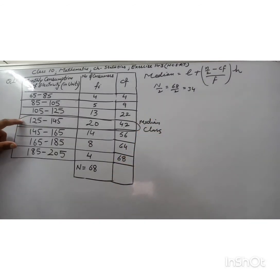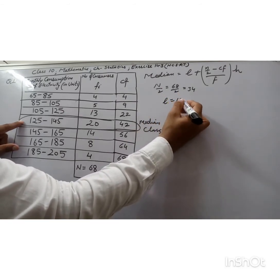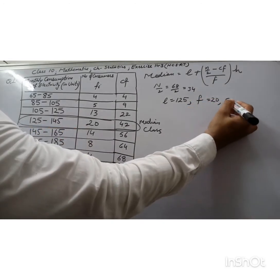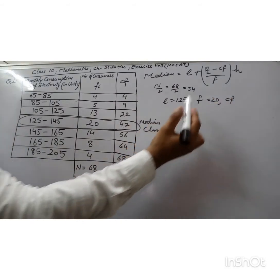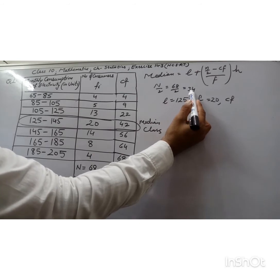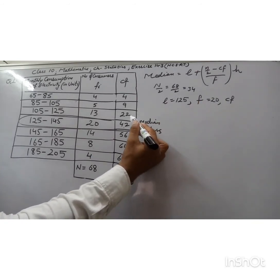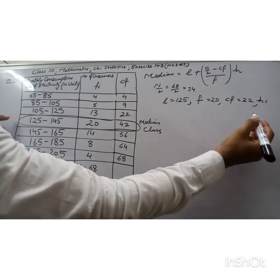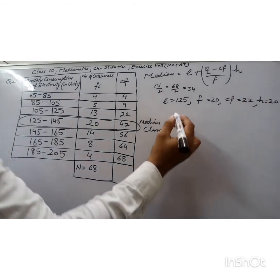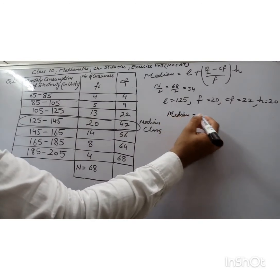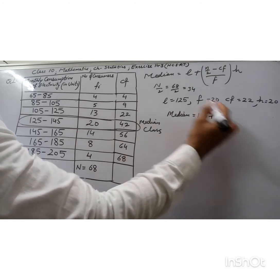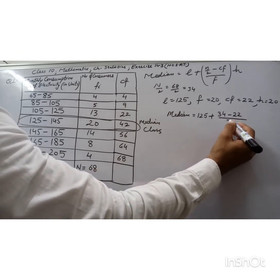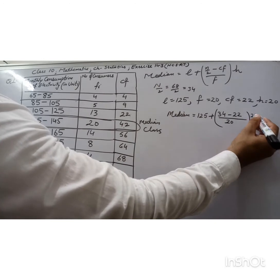The lower limit of the median class is l = 125, and the frequency of the median class is f = 20. For cf, we take the cumulative frequency just less than 34, which is 22. The class size h = 20. Substituting the values: median = 125 + (34 − 22) / 20 × 20. Since 20 and 20 cancel out, we get 125 + 12.